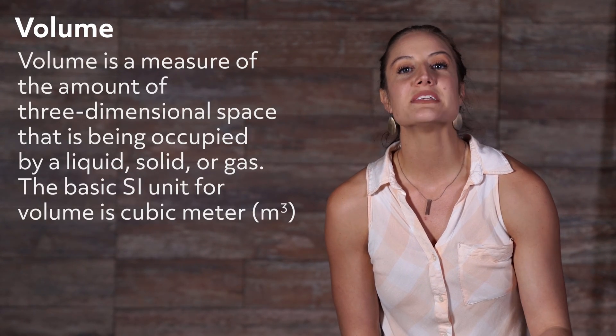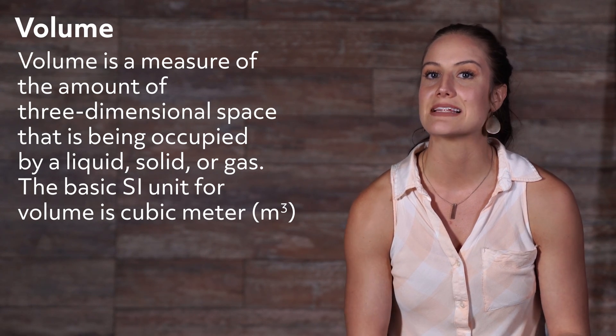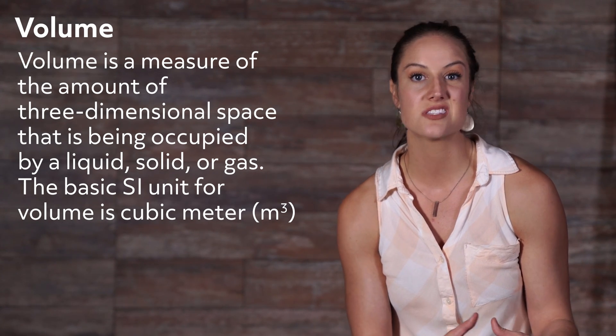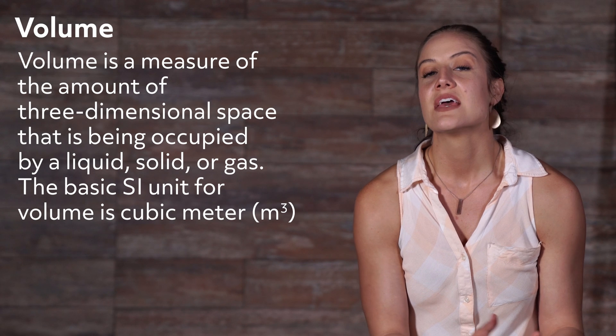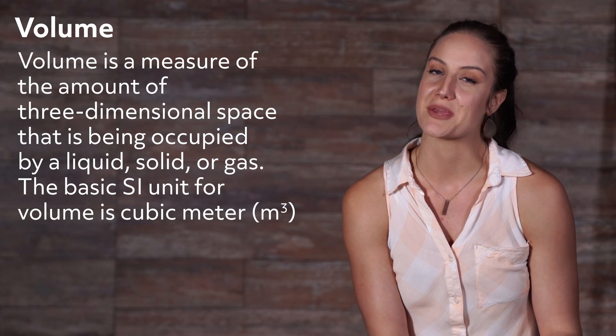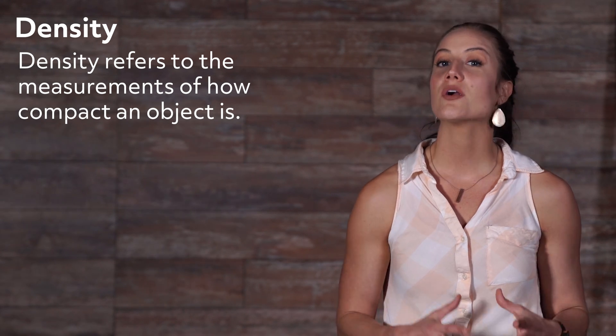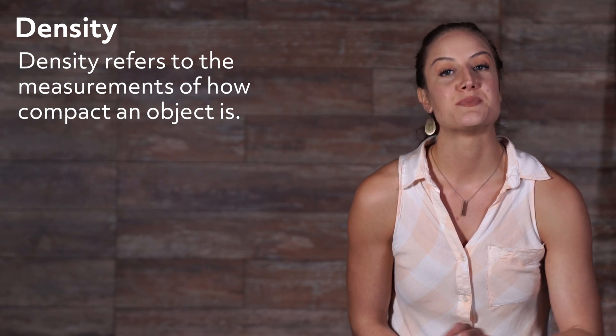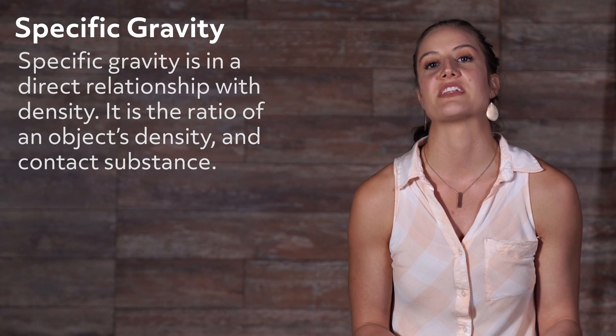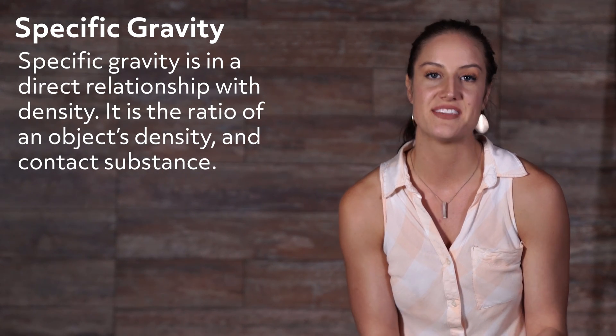Volume is a measure of the amount of three-dimensional space that is being occupied by a liquid, solid, or gas. The basic SI unit for volume is the cubic meter. Density refers to the measurement of how compact an object is. Specific gravity is in direct relationship with density — it is the ratio of an object's density and its contact substance. For example, if you want to place an object in water, the specific gravity would tell you if it would float or not.